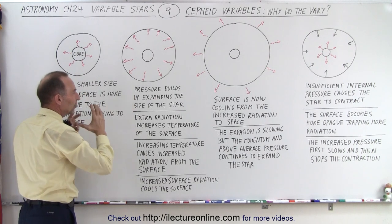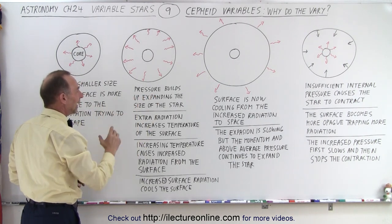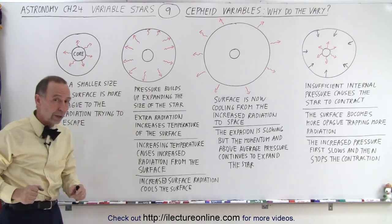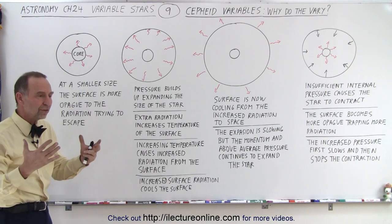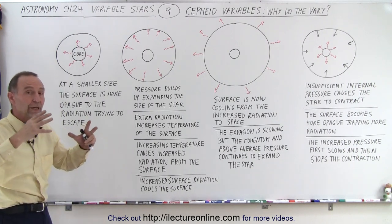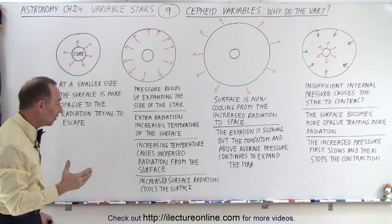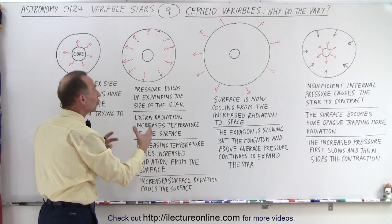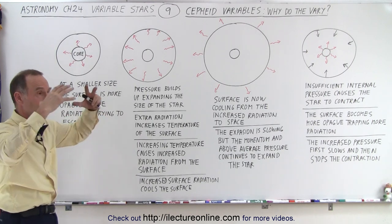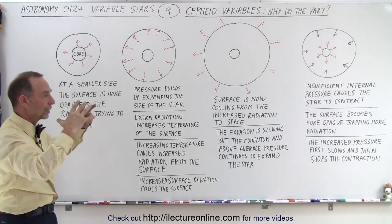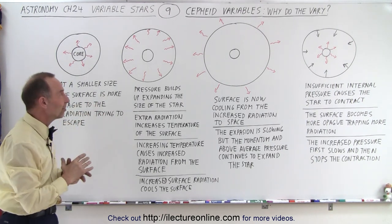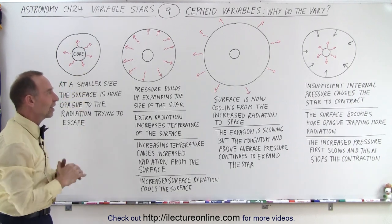The pressure builds up, the star is expanding, and the extra radiation begins to increase the surface temperature of the star as well. As the surface temperature increases, it begins to radiate more energy from the surface. The star becomes brighter and brighter. The star is now about 8% bigger than it was at its smallest, and we have reached the maximum brightness at the peak of its cycle.